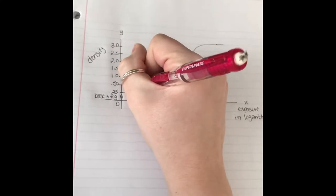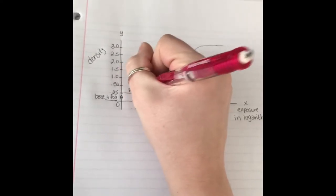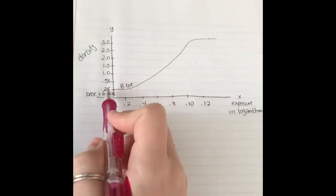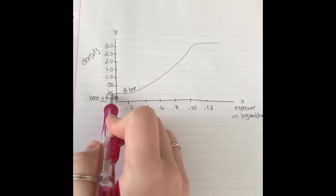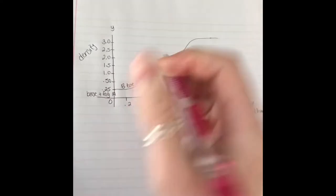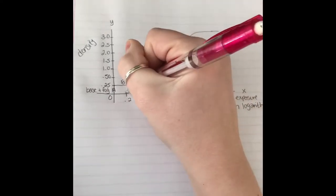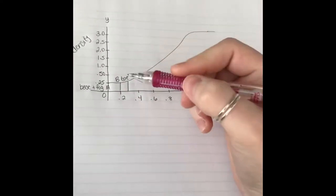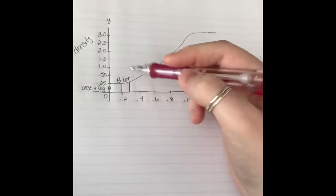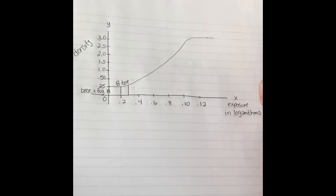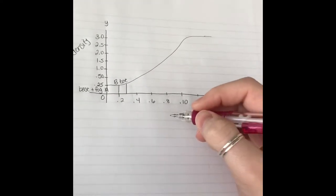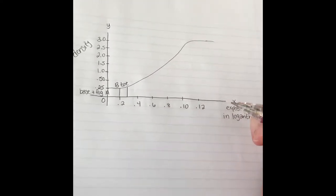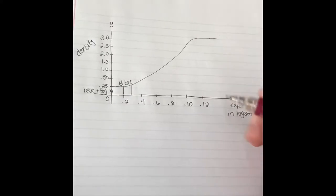Over here is the toe of the curve. This is the area of low exposure and cannot exceed 0.25 on the curve. Just because you double or triple the exposure does not mean that you will double or triple the density, because the exposure is in log numbers, meaning it is an exponentially low exposure area.